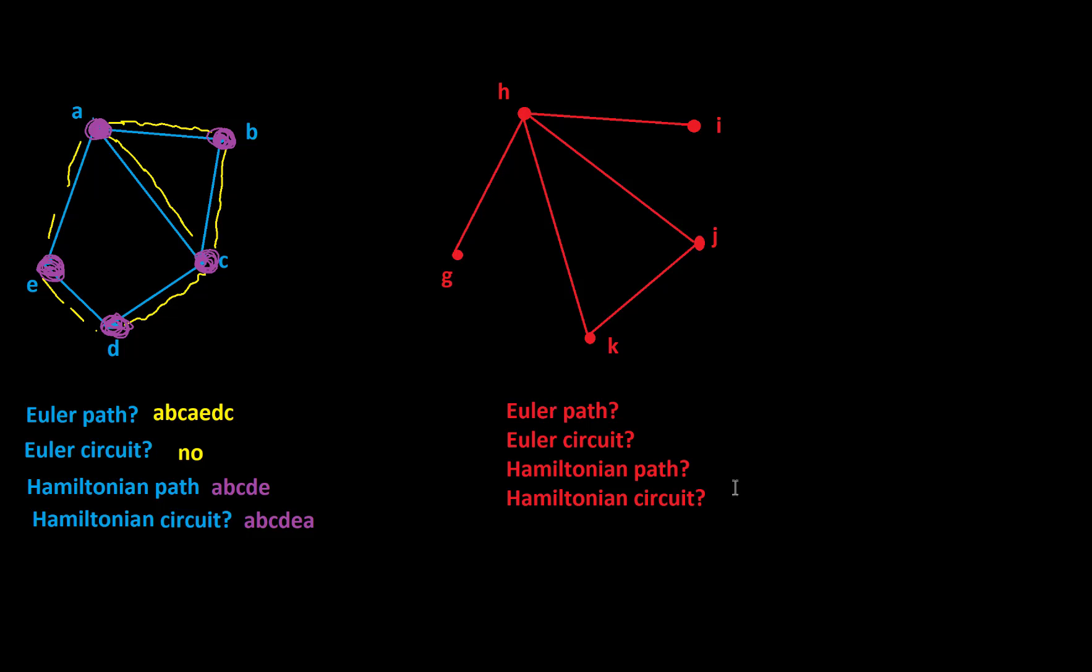So an Euler path, if we try to look for an Euler path, let's see what we could do. Well, we could start at G and I could travel from G to H and then I could go H to K and then K to J, J back to H and H out to I. So there is an Euler path and that was not too bad to find. Let's list that here. So I went G, H, K, J, H, I. There is not an Euler circuit.